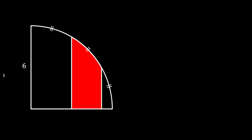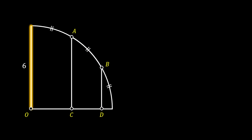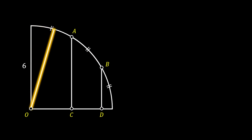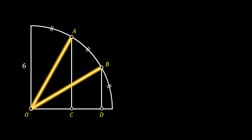Let's first label the center of our quarter circle as O. Then we can label all the vertices of our red shaded area as A, B, C, and D. Now let's take a look at the radius of our quarter circle. We can rotate this radius to point A and then to point B. As you can see, it will divide the 90-degree angle into three identical angles of 30 degrees, since points A and B are dividing the arc into three identical pieces.